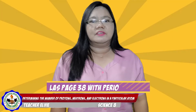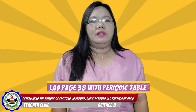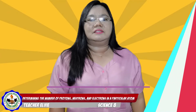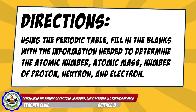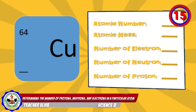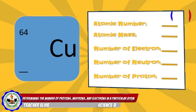Open your learning activity sheet on page 38 together with your periodic table, and consider the shorthand notation in answering this activity. Directions: Using the periodic table, fill in the blanks with the information needed to determine the atomic number, atomic mass, number of protons, neutrons, and electrons. Number 1: Copper. The atomic number is 29, atomic mass is 64, number of electrons is 29, number of neutrons is 35, and number of protons is 29.